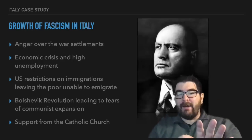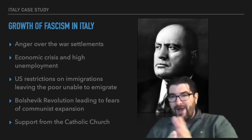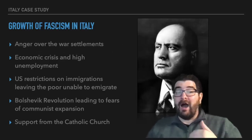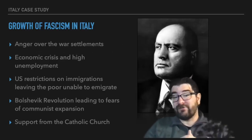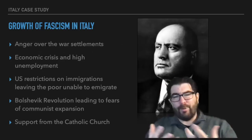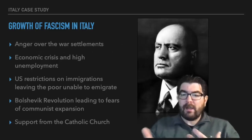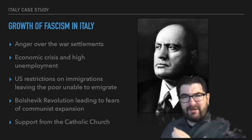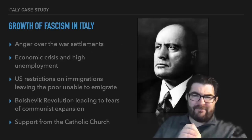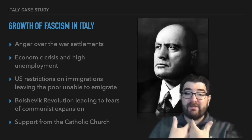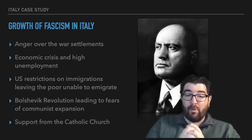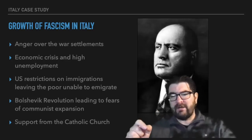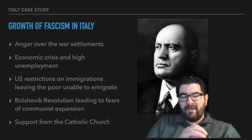This growth in fascism happened pretty rapidly in the 1920s. There was anger over the war settlements Italy had to deal with, an economic crisis in Italy following the First World War, and high unemployment. When people are economically frustrated, they are more likely to move towards radical political ideas. America also has a part to play in this, just as with Japanese sentiments after World War One — the US began putting serious restrictions on immigration in the 1920s, making it harder for poor Italians looking for jobs and opportunities to emigrate out of Italy.